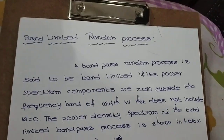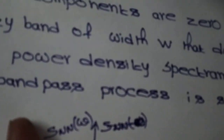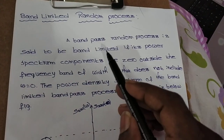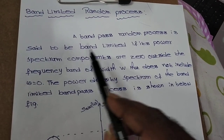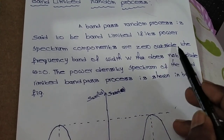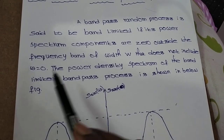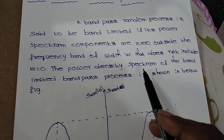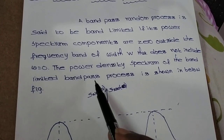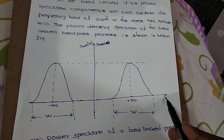Next topic: band limited random process. A band pass random process is said to be band limited if its power spectral components are zero outside the frequency of bandwidth W, and does not include omega equal to zero. The power density spectrum of a band limited band pass process is shown in figure.